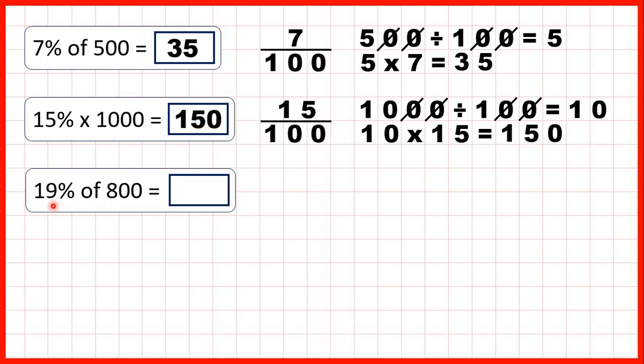Finally, we need to find 19% of 800. So 19% is the same as 19 hundredths. So first we can divide by the denominator, so divide 800 by 100. That's 8, because again we can cancel two end zeros in our division question, and then 8 divided by 1 is 8.